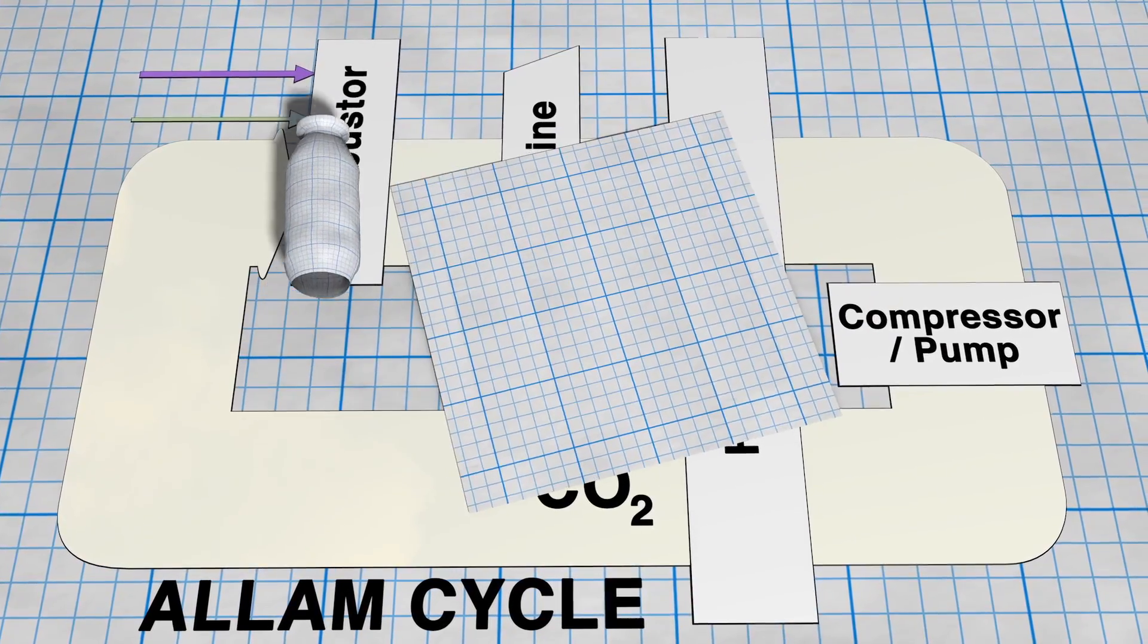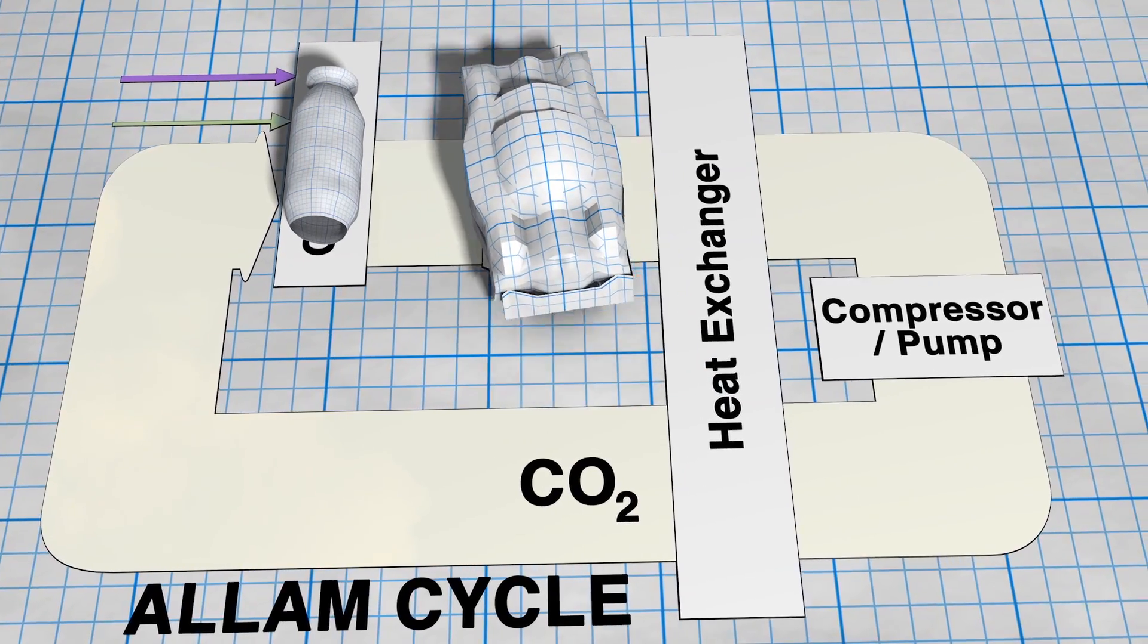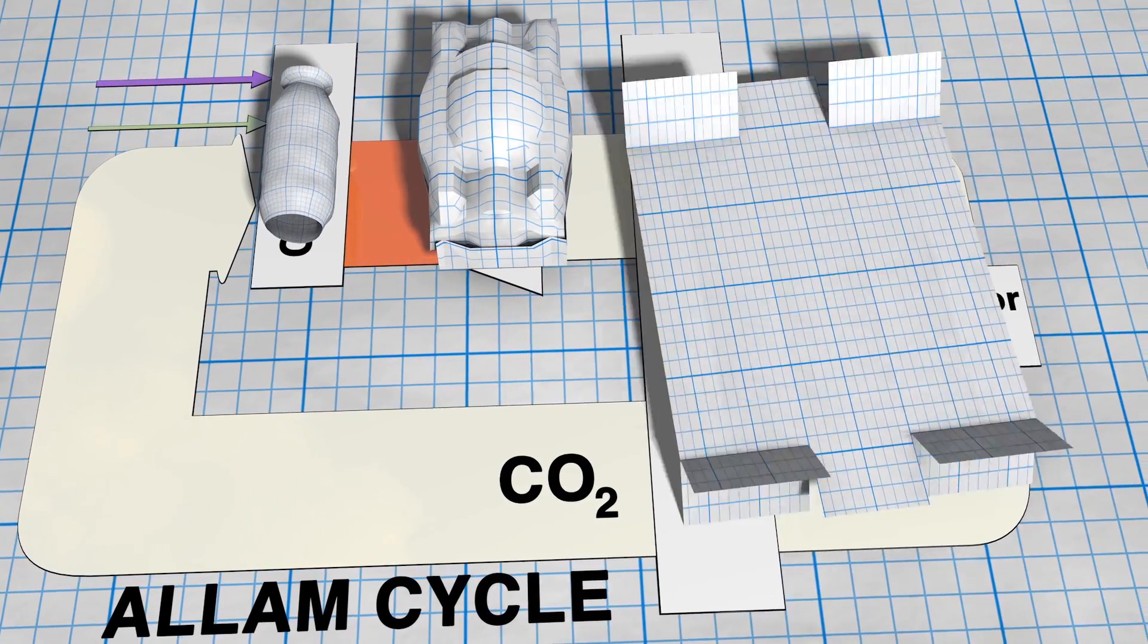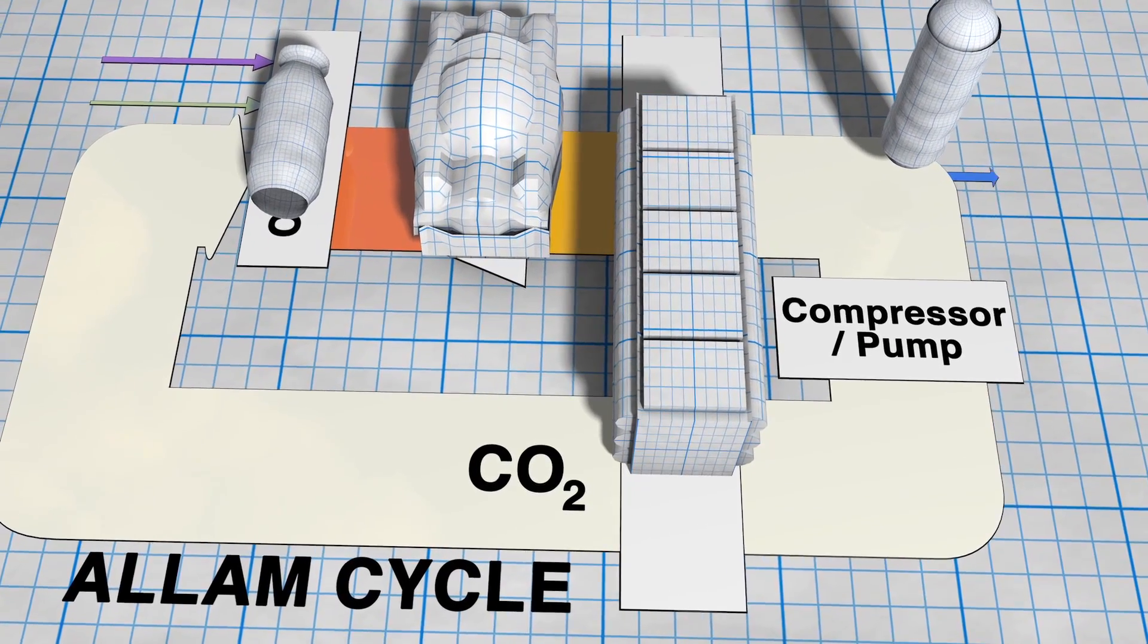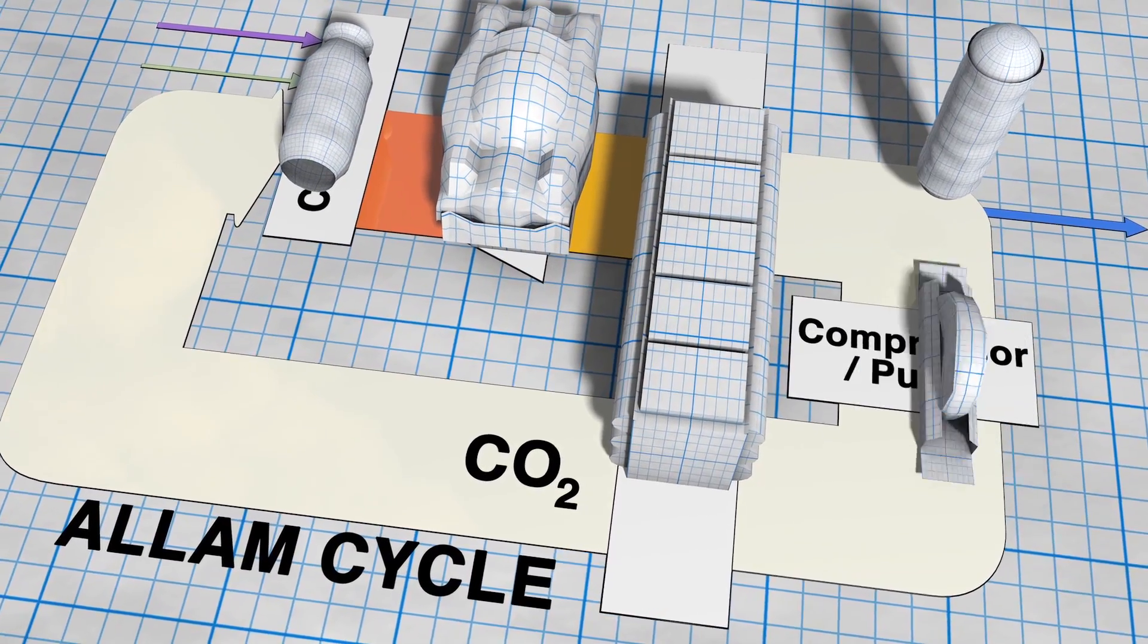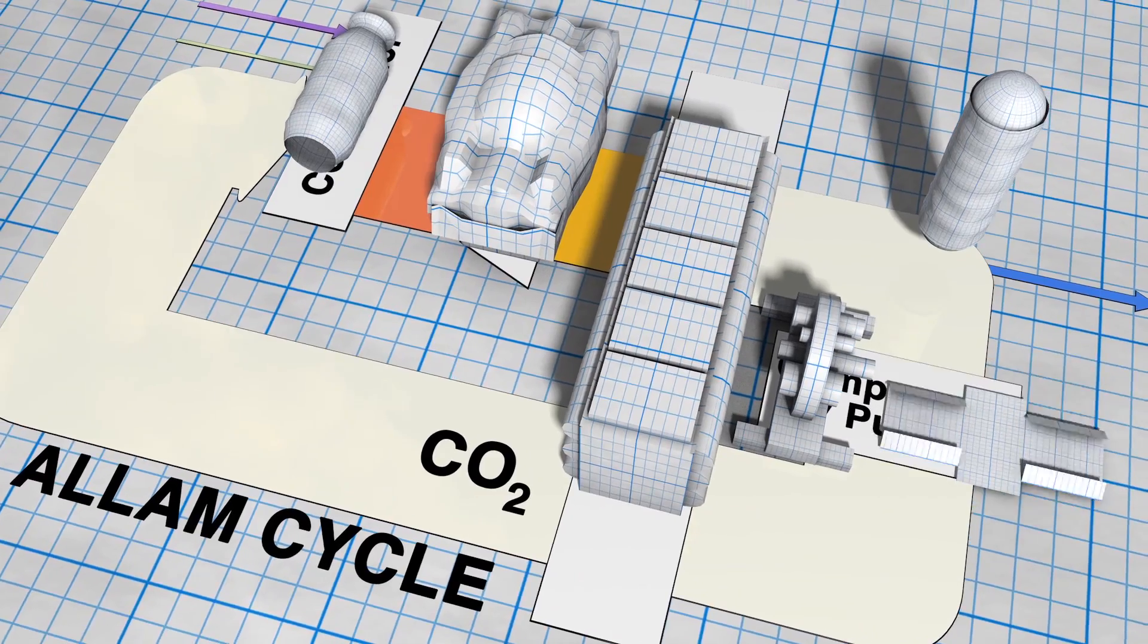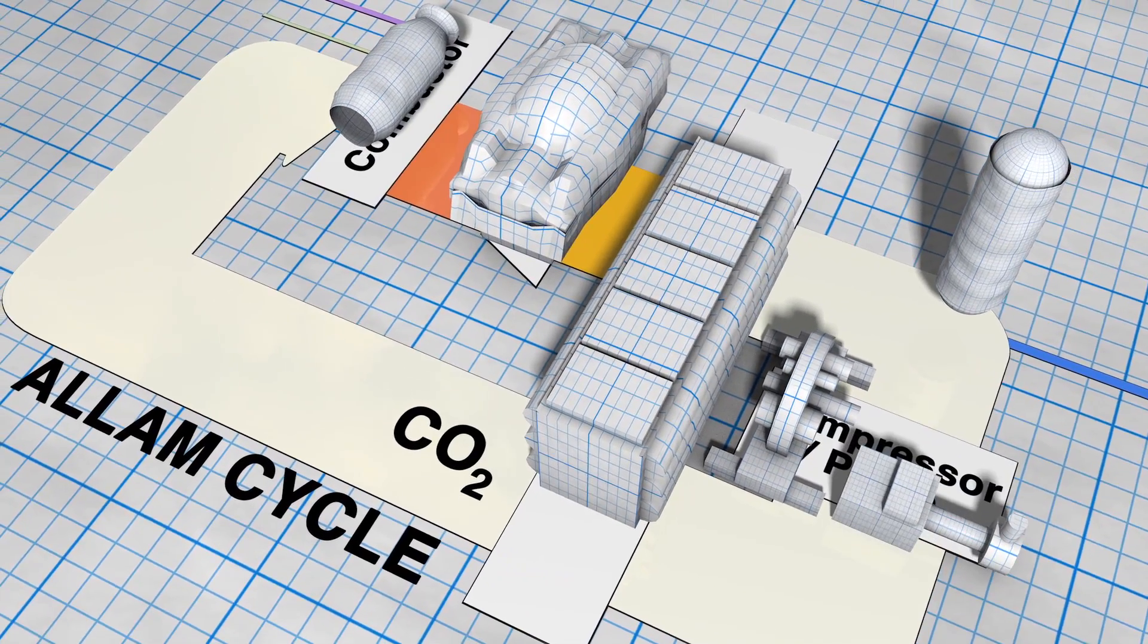The resulting working fluid of high-pressure CO2 and water is expanded through a turbine and then cooled in a heat exchanger. Water is removed, and the remaining nearly pure carbon dioxide stream is compressed and pumped back to high pressure.